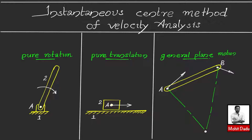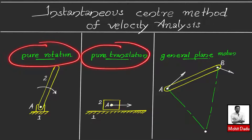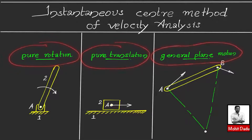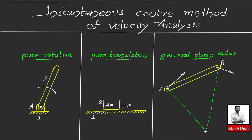In this video we'll be discussing the instantaneous center method of velocity analysis. By instantaneous center we mean a point about which a link is assumed to have pure rotation. There can be three types of motion in a mechanism: pure rotation, pure translation, and general plane motion. For all three types, we can assume there is a point about which these motions occur such that this is pure rotation about that point.